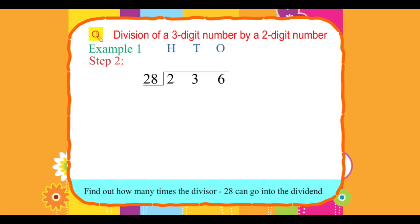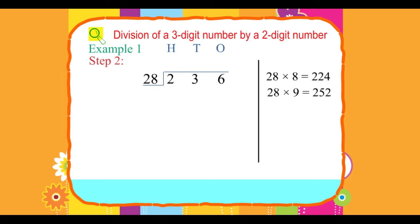Find out how many times the divisor 28 can go into dividend 236. 28 times 8 equals 224, and 28 times 9 equals 252. So we will consider 28 times 8 equals 224, since 224 is less than 236, and not 28 times 9 equals 252, since 252 is greater than 236.